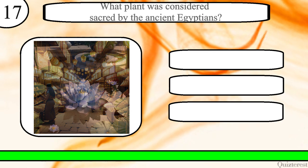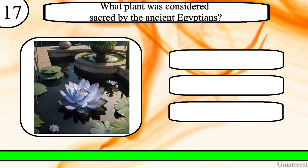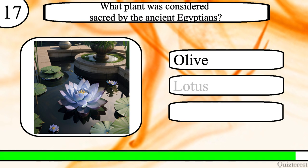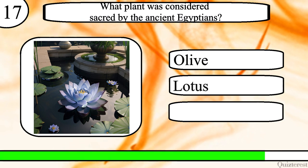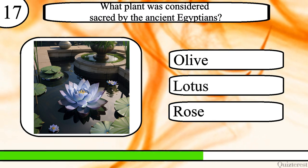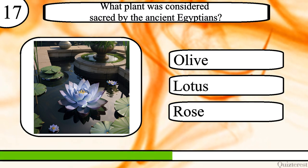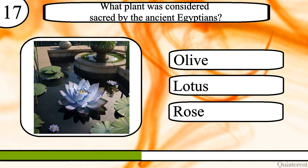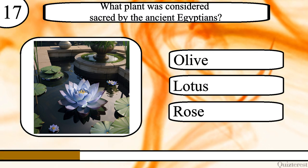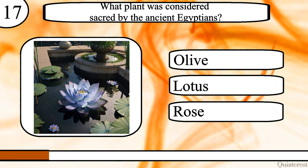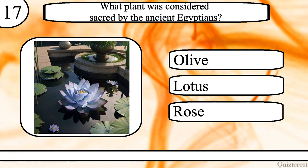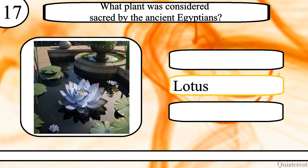Question 17. What plant was considered sacred by the ancient Egyptians? Olive, lotus or rose? The correct answer is lotus.